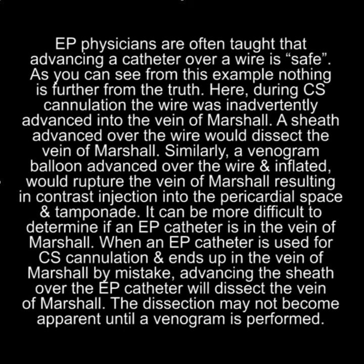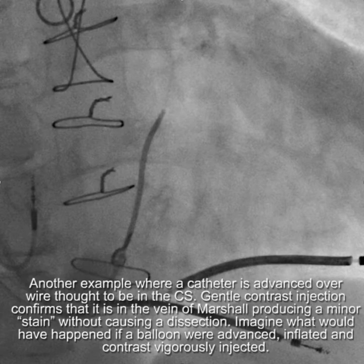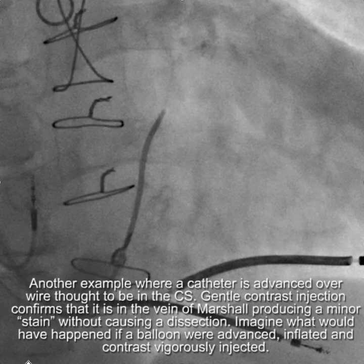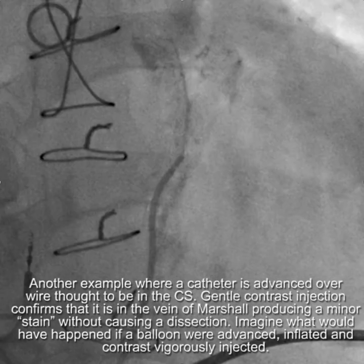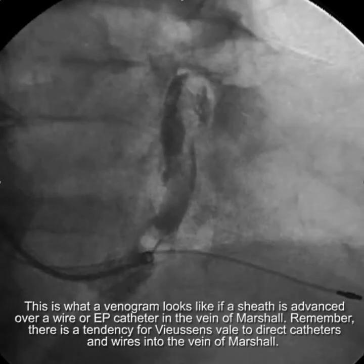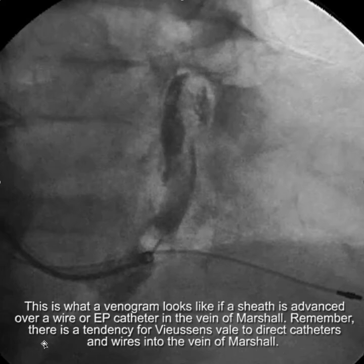This dissection probably won't become apparent until you do a venogram. Here is another example where a catheter is advanced over a wire thought to be in the CS. Gentle contrast injection confirms that it is in the vein of Marshall, producing a minor stain without causing a dissection. Just imagine what would happen if a balloon were advanced, inflated, and contrast were vigorously injected. This is what a venogram looks like if a sheath is advanced over a wire or EP catheter into the vein of Marshall, again thinking that it's safe.